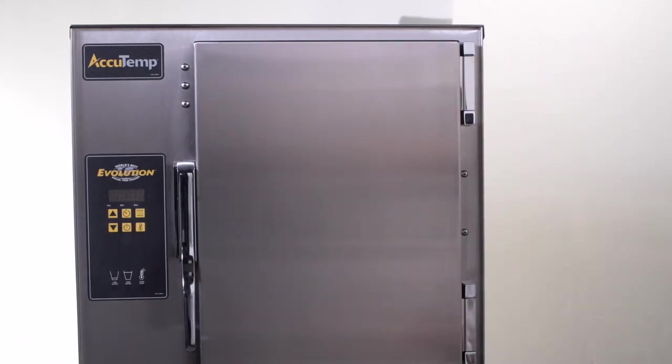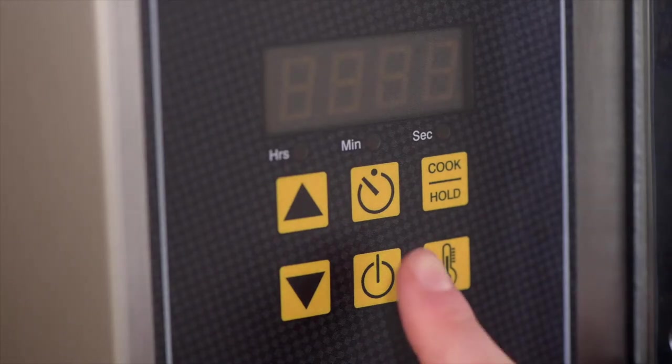If you have an Evolution steamer that is connected to a water and drain line, simply ensure the drain valve is closed and turn the power on. The steamer will automatically fill with water and preheat.